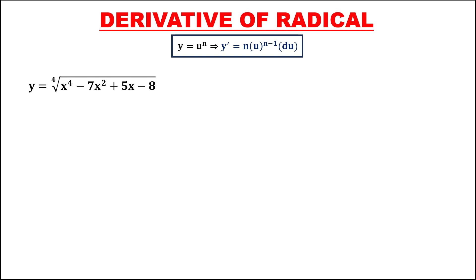For this problem, to find the derivative of a radical, we use the general power formula. For this given, we need to rewrite the expression in exponential form. So this is equal to y equals x to the power 4 minus 7x squared plus 5x minus 8, then for the exponent, this is 1 over 4, so the root is the denominator of the exponent.